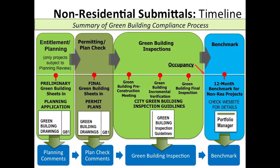Once we get to inspections there are three different phases of requirements included for enforcement. There is a required green building pre-construction meeting. There is a required green building incremental verification, and that's only for requirements subject to incremental verification. There are a limited number of those, so you'll need to check the green building inspection guidelines to determine if your project meets those requirements. And then finally the green building final inspection — projects need to reference the city's green building inspection guidelines shown on the slide.